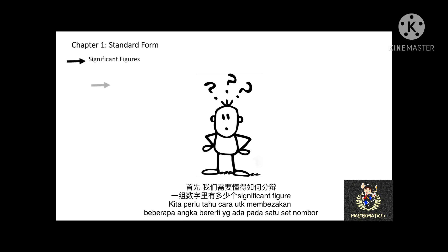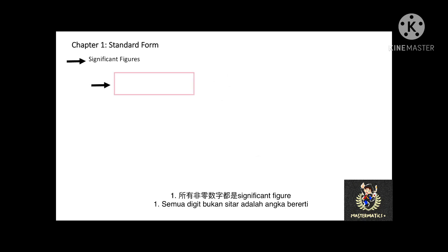How do we determine the number of significant figures? First, all non-zero digits are significant. Therefore, 42 is 2 significant figures, and 42.42 is 4 significant figures.